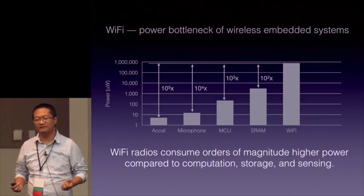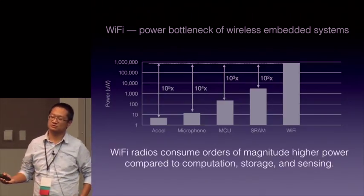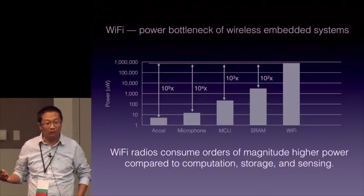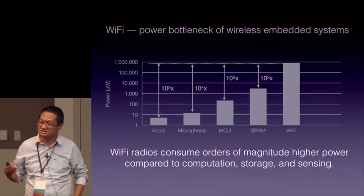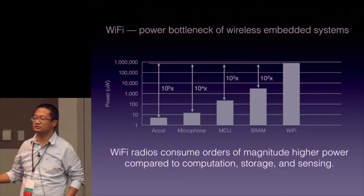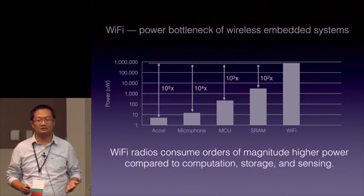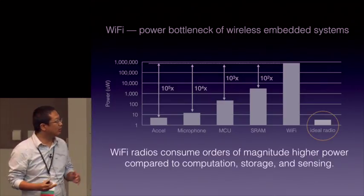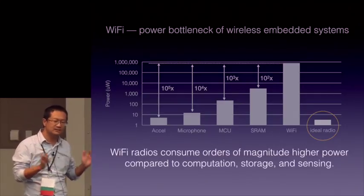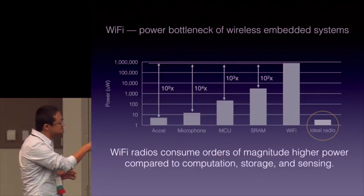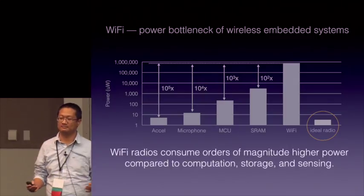When we use a Wi-Fi radio to transmit information, we have to think about how much power will be consumed for each single-bit transmission. Ideally, for a low-power embedded system, we want a radio that only consumes microwatts of power.